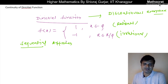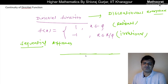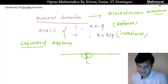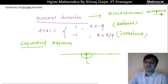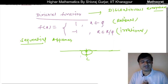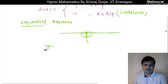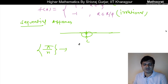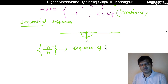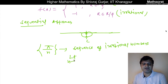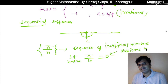On the real line, we can always find a sequence of rational numbers that converges to an irrational number, or a sequence of irrational numbers that converges to a rational number. For example, the sequence π/n consists of irrational numbers, and it converges to the limit 0 as n tends to infinity, and 0 is of course a rational number.